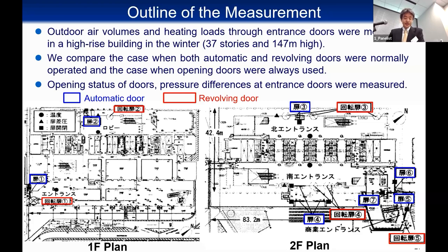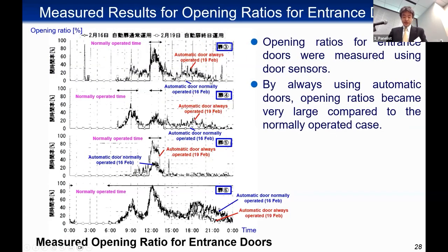The building has 37 stories and is 147 meters high. We compared the case when both automatic and revolving doors are normally operated versus the case when only automatic doors are always used. Opening status and pressure differences at the entrance doors were measured. This is the plan for the first and second floors — there are many doors, with the blue rectangles showing automatic doors and the red rectangles showing revolving doors. Opening ratios for entrance doors were measured, and by always using automatic doors the opening ratios became very large compared to the normally operated case.